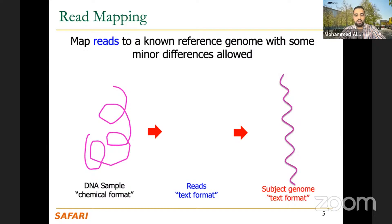You don't consider it as an exact match to the reference genome — you are not aiming for that, but rather you allow some differences. Because fundamentally, your DNA is different from your brother's, from others. That's why we map reads to a known reference genome while tolerating some differences. These differences could be either genetic variation between you and other individuals, or they could be some sequencing errors. And that is simply what read mapping is.